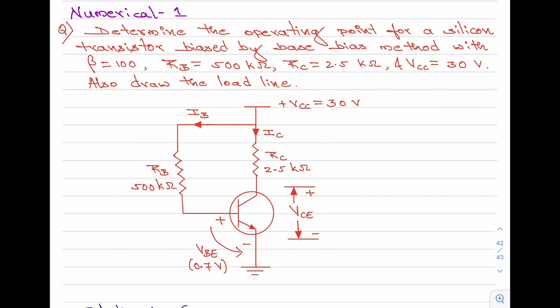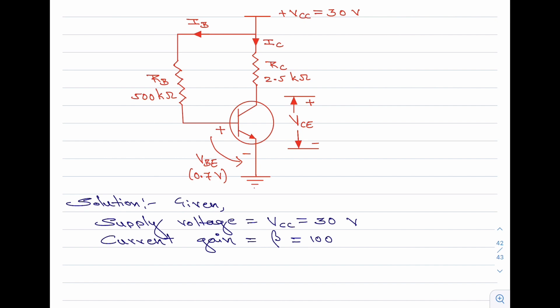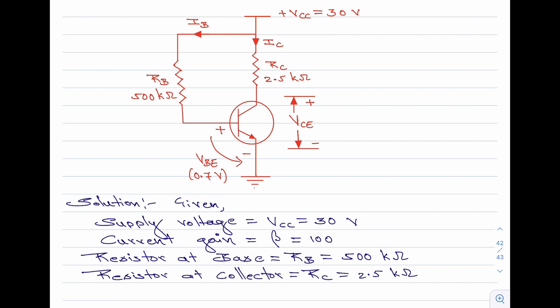Here we are asked to find the operating point for the transistor as well as draw the load line. Let us start with the solution. The value of the supply voltage Vcc is 30 volts, the current gain beta is 100, the base resistor Rb is 500 kilo ohms, the collector resistor Rc is 2.5 kilo ohms, and since the transistor is made of silicon, the base-to-emitter voltage VBE is 0.7 volt. These are the given values.